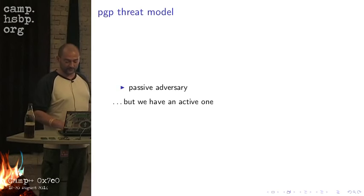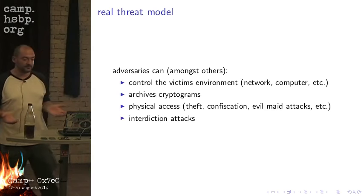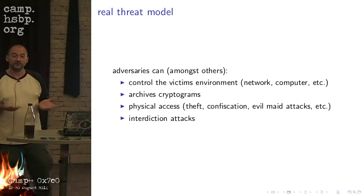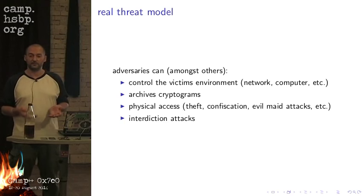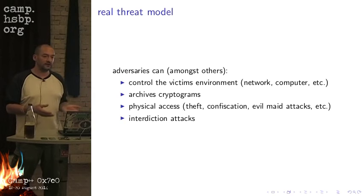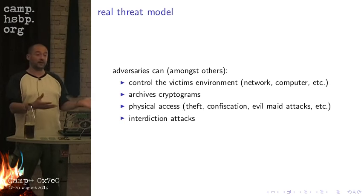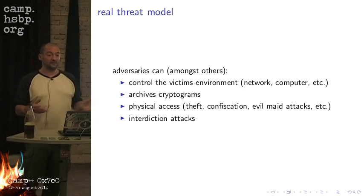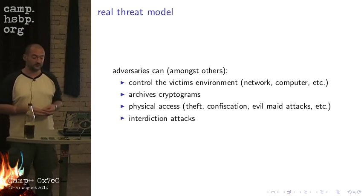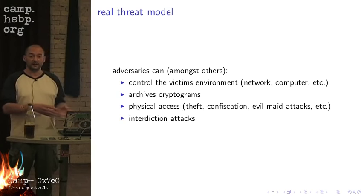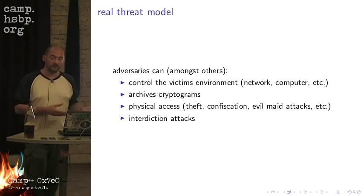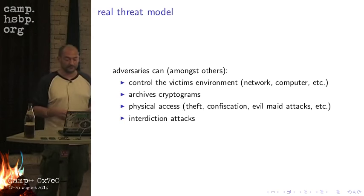PGP is looking at a passive adversary where we have an active one. The real threat model includes adversaries who can control the victim's environment — they can control the network and their computers. This is not just about the NSA. The Hungarian secret service is also a customer of Hacking Team. With that malware, if they introduce it to a Hungarian investigative journalist's Windows system that hasn't been updated in months, they can still recover PGP keys and read all his mails, and he won't be able to detect that.